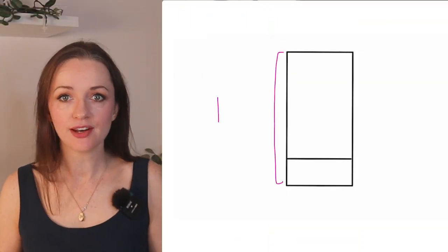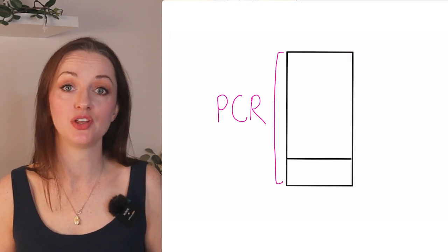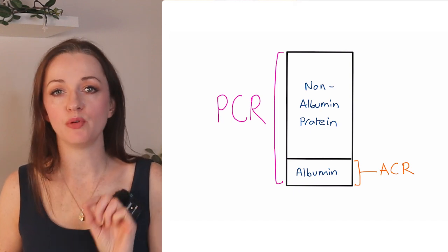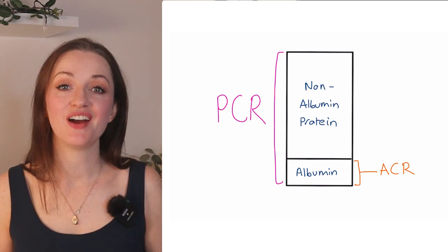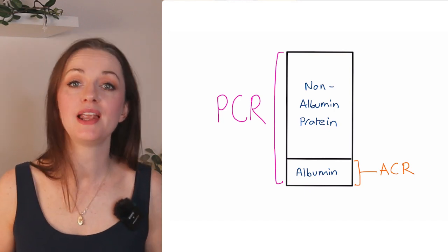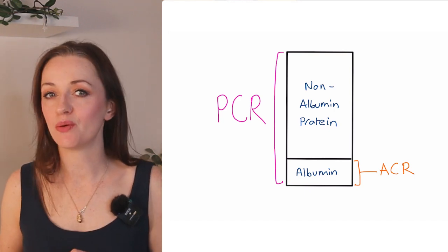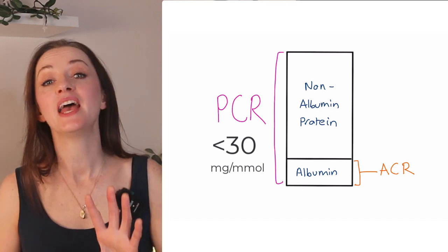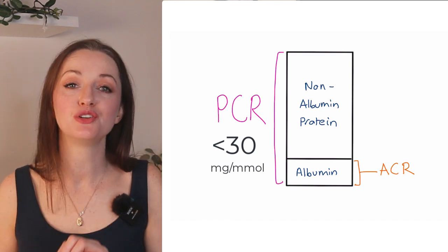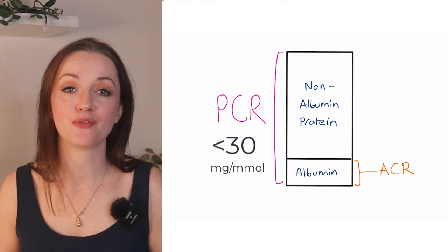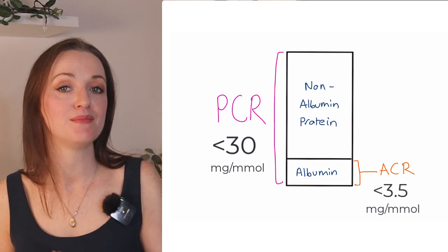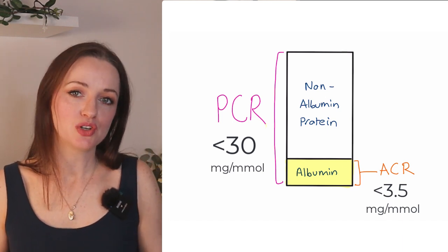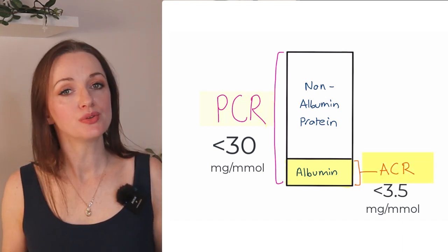Now let's look at the ACR and PCR. The protein-creatinine ratio refers to the total amount of protein in the urine, including albumin, whereas the albumin-creatinine ratio refers only to the albumin in the urine. The PCR is the total — all albumin and non-albumin proteins — and under normal circumstances should be less than 20 to 30 milligrams per millimole. The normal value cut-off for the ACR is less than 3.5 milligrams per millimole.